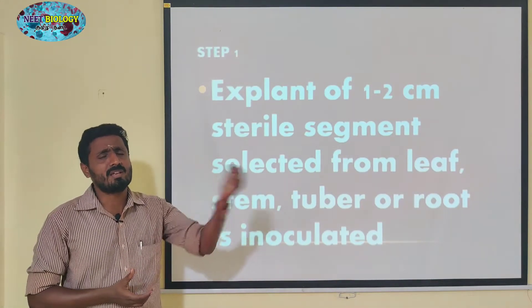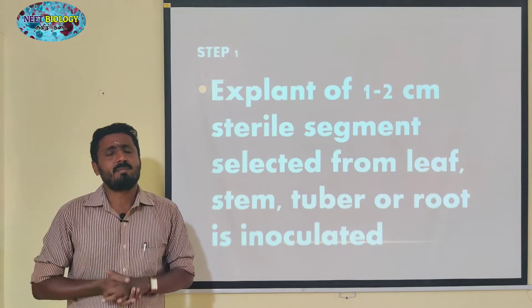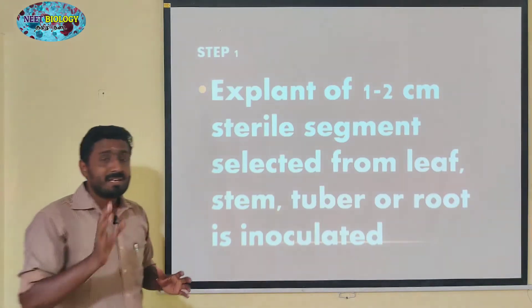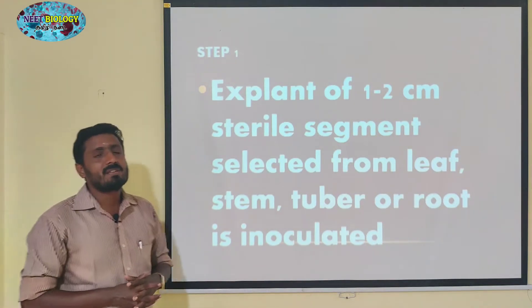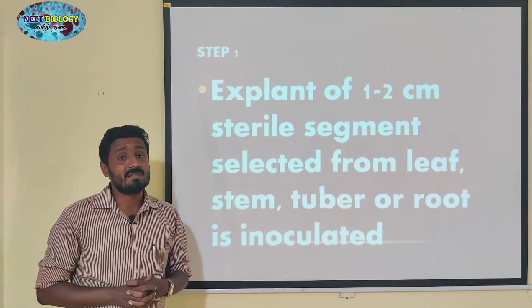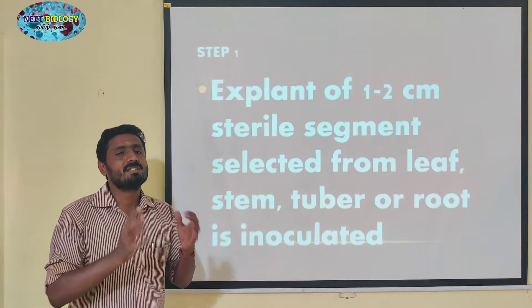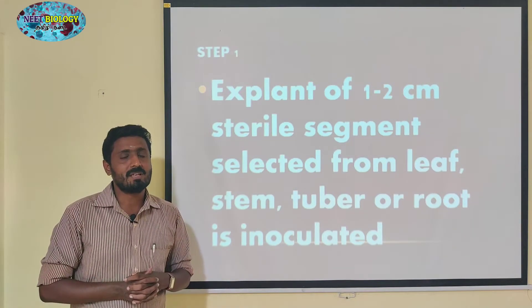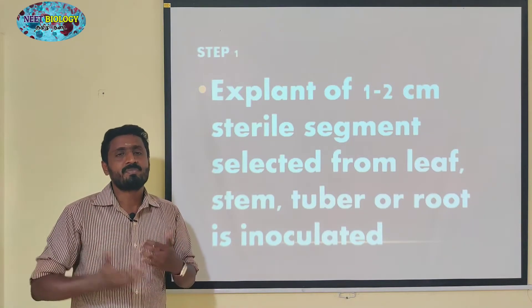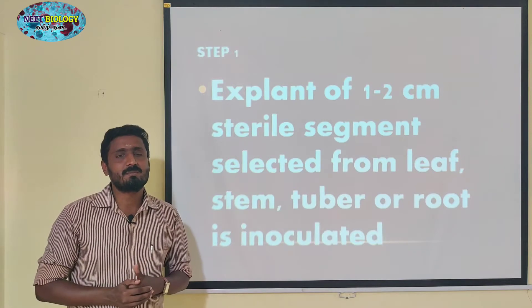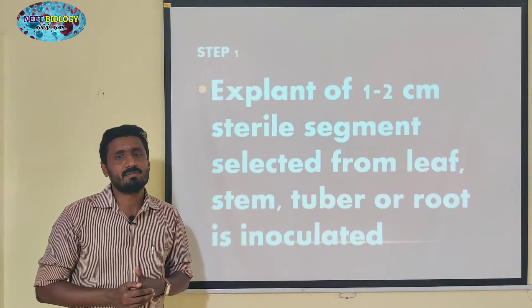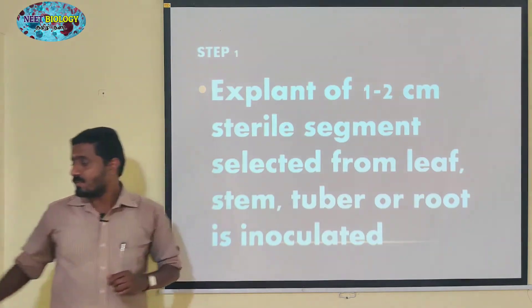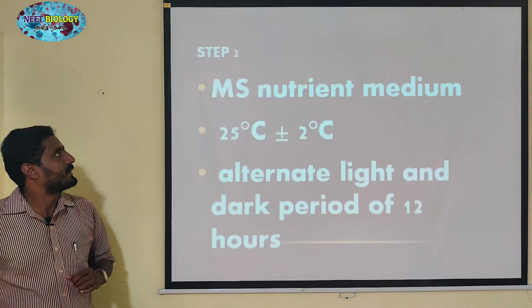In this video, we will see that. They are preferring the mesophyll tissues from the leaves. More amount of chloroplast will be there, so that the growth and photosynthetically they are somewhat efficient. So, you can choose the mesophyll cells.